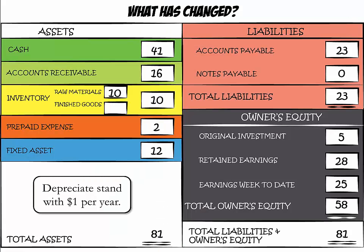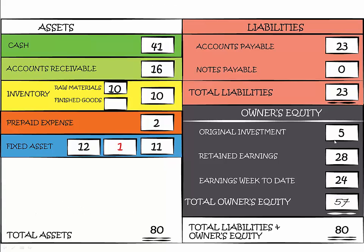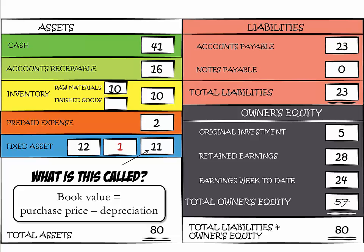We depreciate our stand over 10 years at $1 per year, decreasing the value of our fixed asset from $12 to $11. Depreciation is accounting's way of expensing fixed assets, so it also decreases earnings week to date by $1. The resulting value is called book value — the purchase price minus accumulated depreciation.